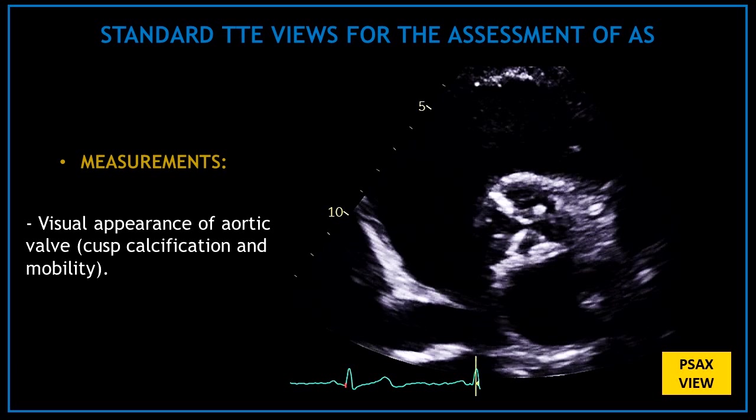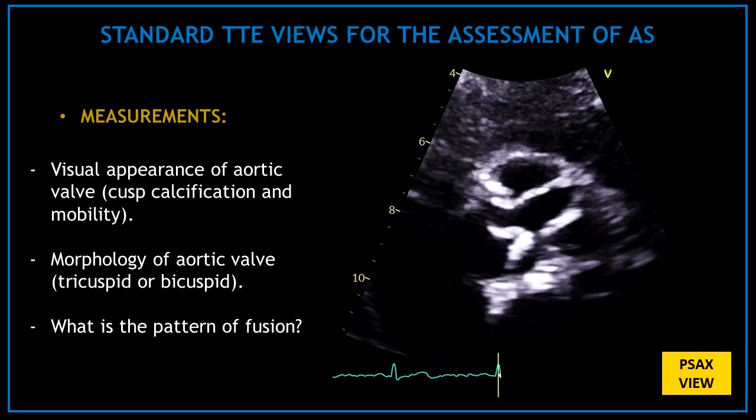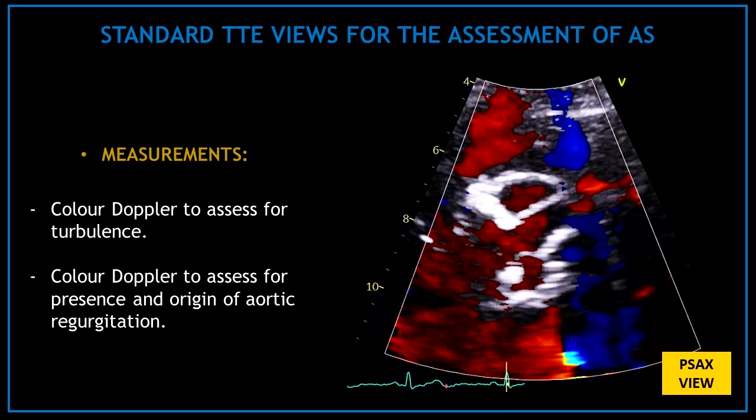In the parasternal short axis view, visually assess the appearance of the aortic valve — look at the cusps, calcification, and mobility. Obtain a zoom view and assess the calcification and mobility of the cusps. Also assess the aortic valve morphology: is it tricuspid or bicuspid, and what is the pattern of fusion? Use color Doppler on top of the aortic valve to assess for turbulence or presence and origin of aortic regurgitation.